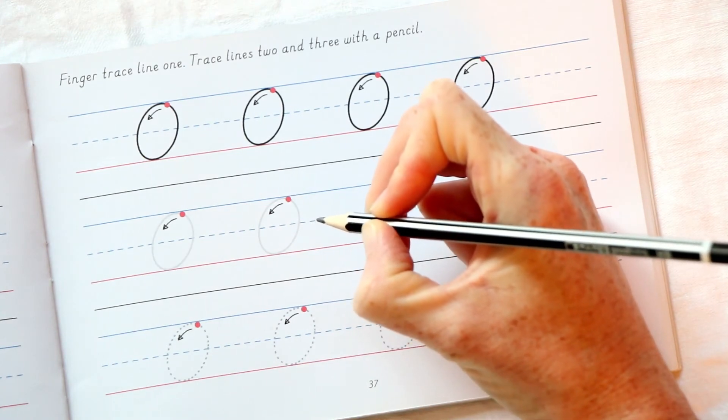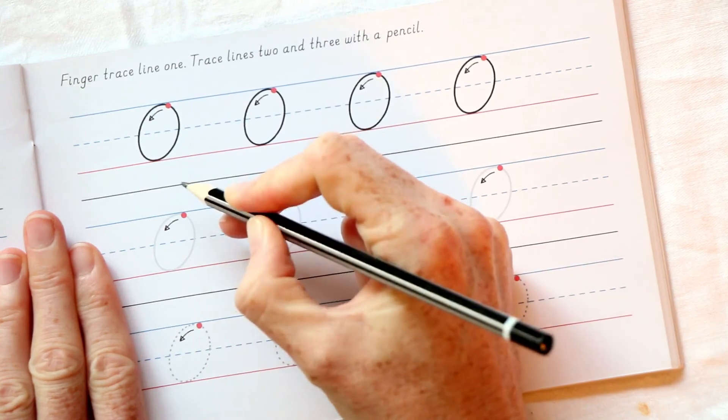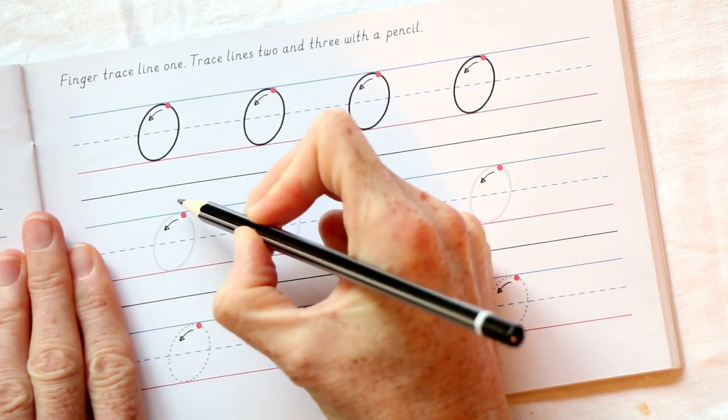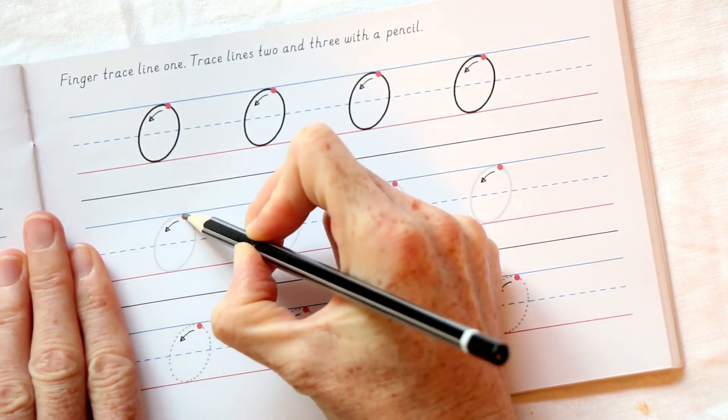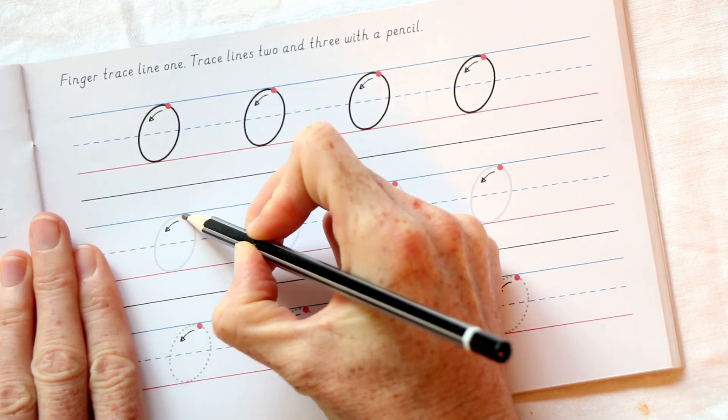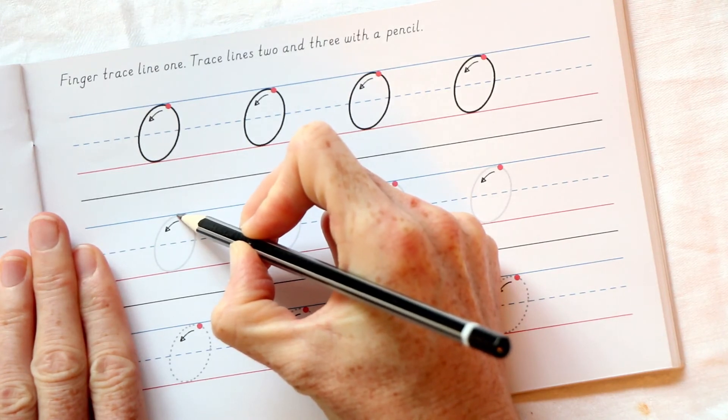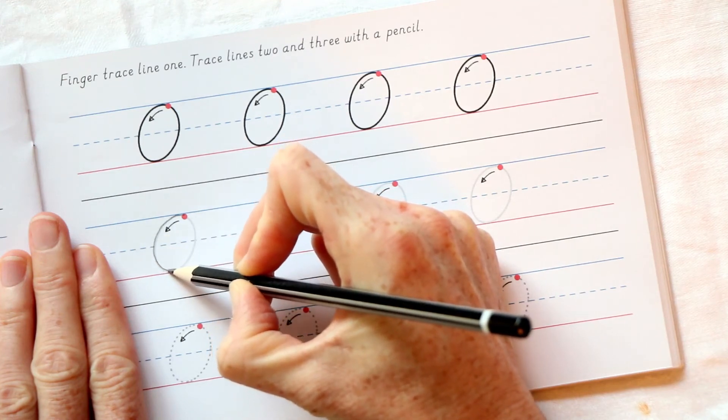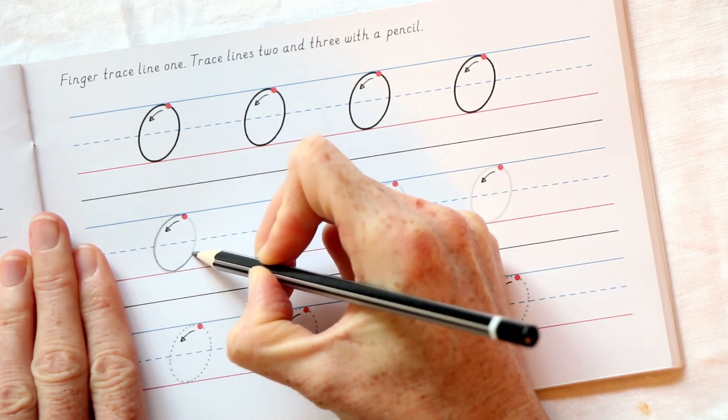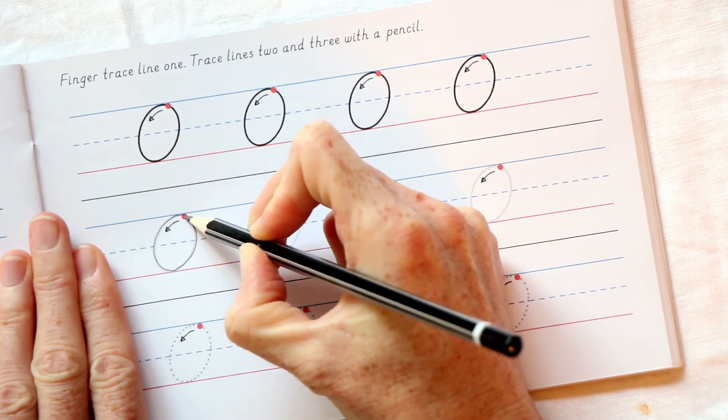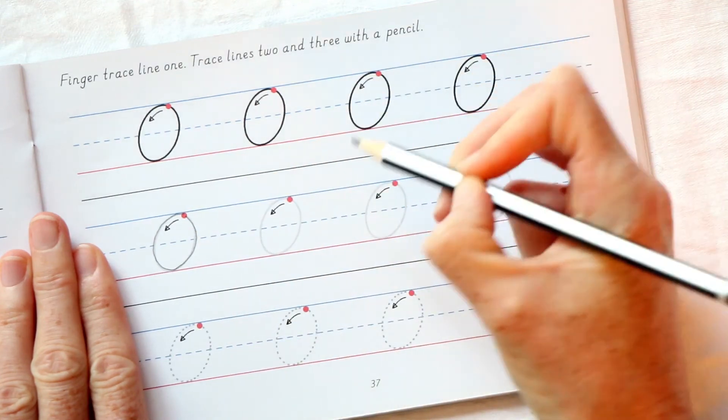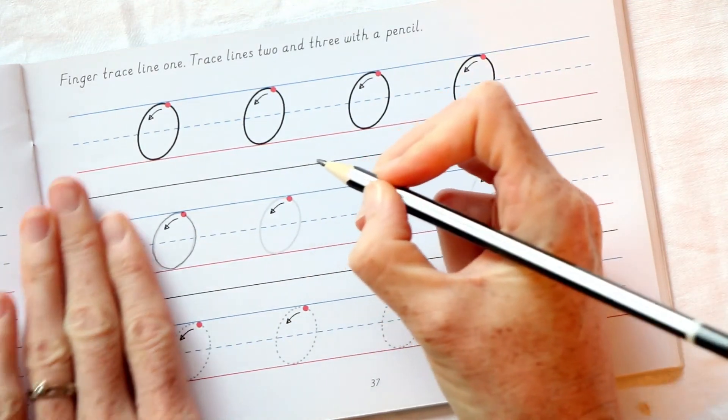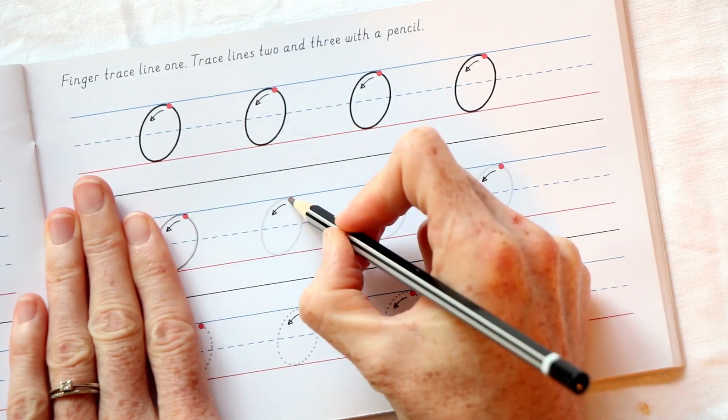What you can do is use your other hand to support your page. Let's start on the second row, the first O. Find the starting point, curve round past the midline, sit on the baseline, curve up, close. Good. Let's do the second one. Find the starting point, curve round down, sit on the baseline, curve up and close.